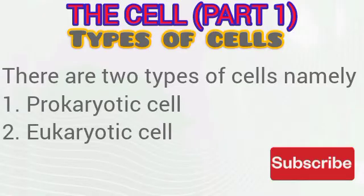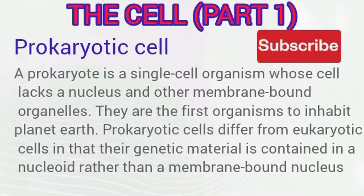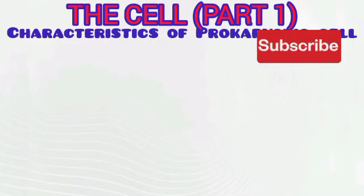Let's take a look at the types of cells. There are two types of cells: the prokaryotic cell and the eukaryotic cell. The prokaryotic cell is a single-celled organism whose cells lack a nucleus and other membrane-bound organelles. They are actually the first organisms to inhabit planet Earth. The prokaryotic cell differs from the eukaryotic cell in that the genetic material or nuclear material is not contained within a double membrane-bound nucleus.